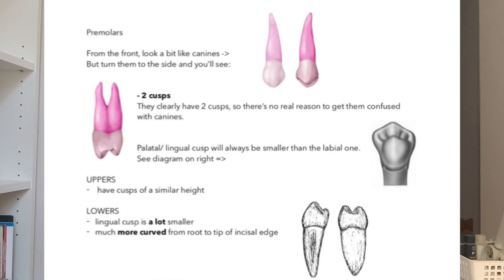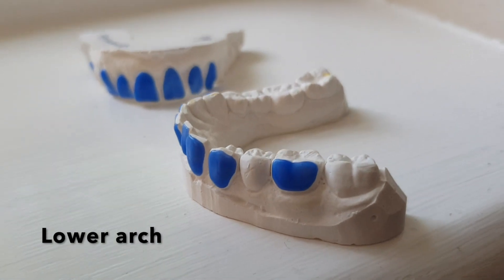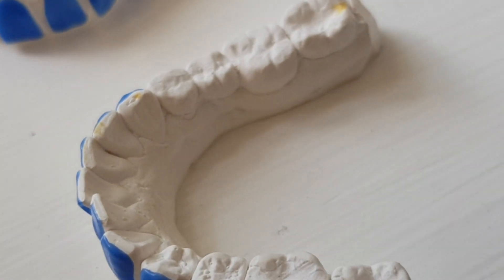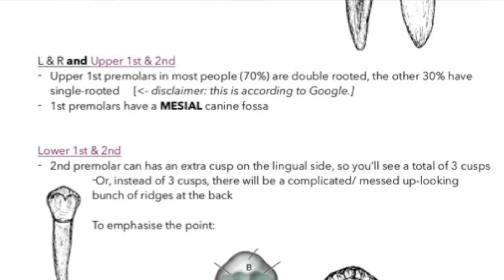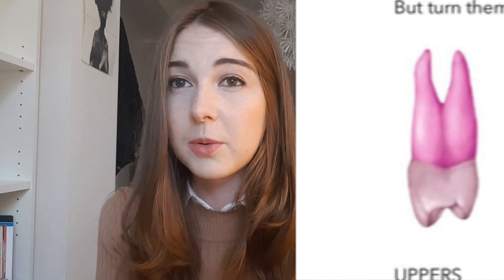In the upper premolars, they have cusps of a similar height — note I said similar, so the palatal cusp is lower than the labial or buccal cusp. Whereas in the lowers, it also has a lower lingual inner cusp, however it's a lot smaller. I think the easiest way is to look at it from the side and see how curved the tooth is. Another easy feature: the upper first premolars in most people — 70% apparently — are double-rooted. If you see a double-rooted premolar, you know it must be an upper and the first one. Another indication of upper first versus upper second is the canine fossa — a depressed concave surface where the crown meets the root on the mesial side of the first premolar, because it's sitting next to a canine.